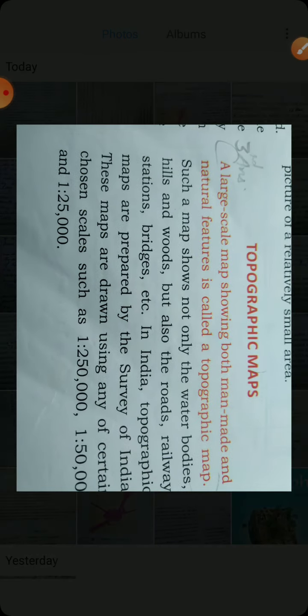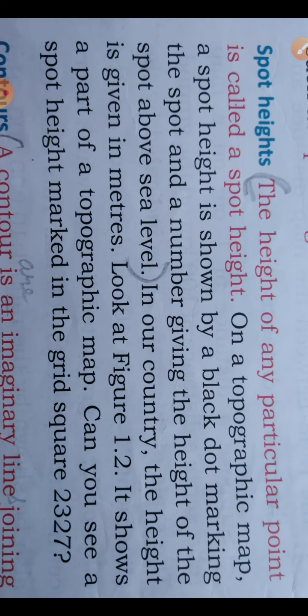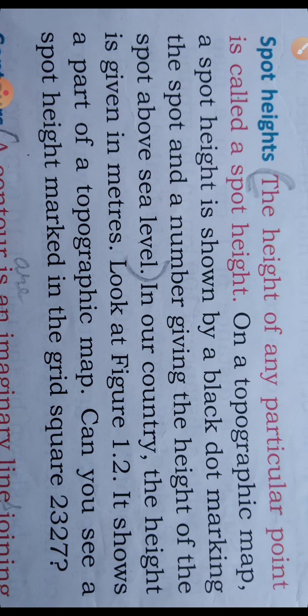Now we are moving on to answer four. Question four: What is spot height and how is it shown on a topographic map? The height of any particular point is called spot height. Then, how it is shown on a topographic map: on a topographic map, spot height is shown by a black dot marking the spot and a number giving the height of the spot above the sea level. Up to here, four answers are over.